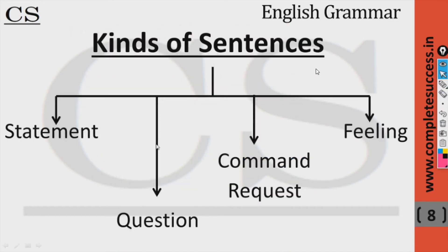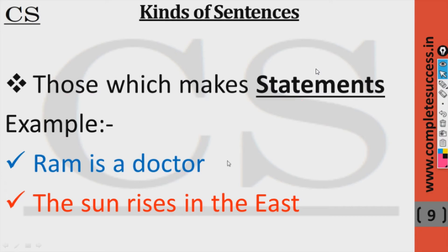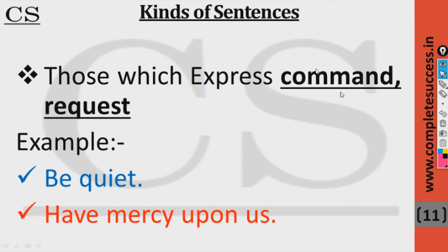There are four types of sentences. The first type is those which make statements — for example: 'Ram is a doctor,' 'The sun rises in the east.' The second type is those which ask questions — like 'What is your name?' and 'Where do you live?' The third type is command or request — like 'Be quiet,' 'Have mercy on us,' 'Come here.'